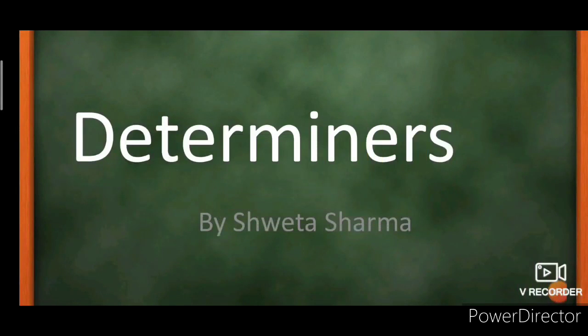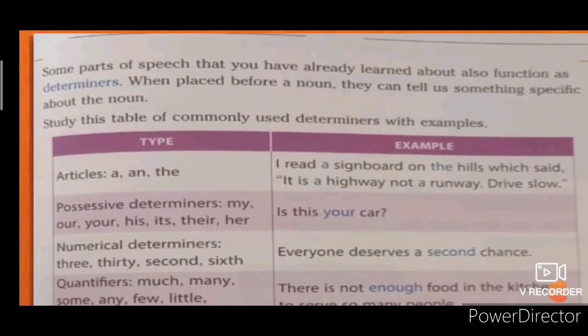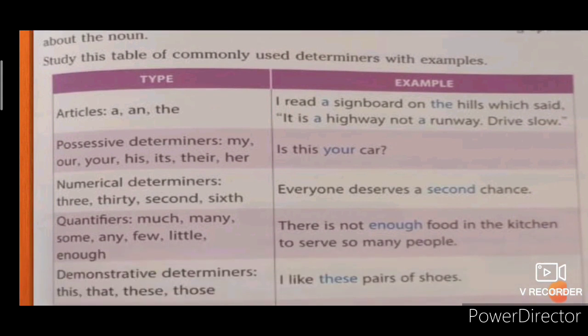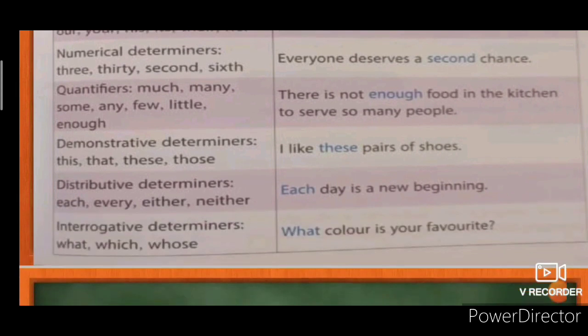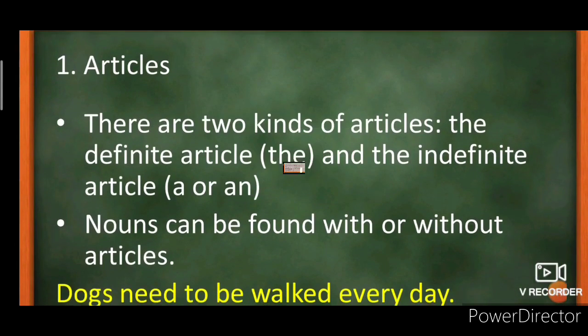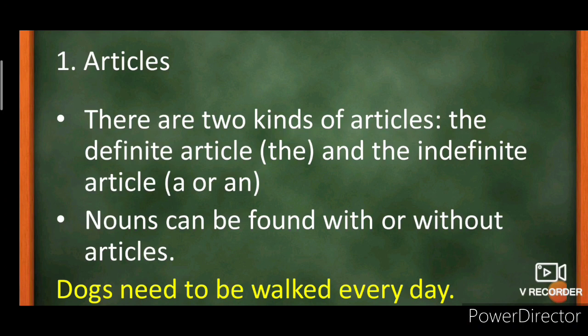Now we will introduce determiners. What do you mean by determiners? Determiners are words which are placed before a noun to introduce it, modify it, or tell us something specific about the noun. There are many types of determiners: articles, possessive determiners, numerical, quantifiers, demonstrative, distributive, and interrogative. Articles you know very well — we have already read about articles a, an, and the.